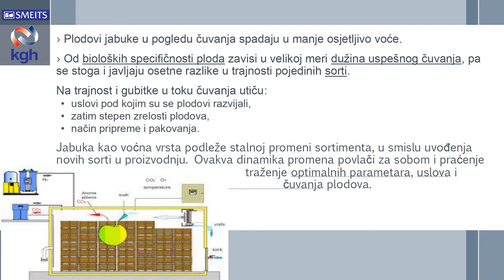Plodovi jabuke u pogledu čuvanja spadaju u manje osetljivo voće. Od biološke specifičnosti ploda zavisi u velikoj meri dužina uspešnog čuvanja, pa se stoga i javljaju osetne razlike u trajnosti pojedinih sorti. Na trajnost i gubitke tokom čuvanja utiču uslovi pod kojim su se plodovi razvijeli — agrotehničke mere — zatim stepen zrelosti plodova, naročito prilagođen momentu ubranja, jer prevremeno ubrani plodovi imaju veće fiziološke promene, a prezreli plodovi jako kratko mogu da se čuvaju. Stepen zrelosti je jako važan parametar, kao i način pripreme i pakovanje.